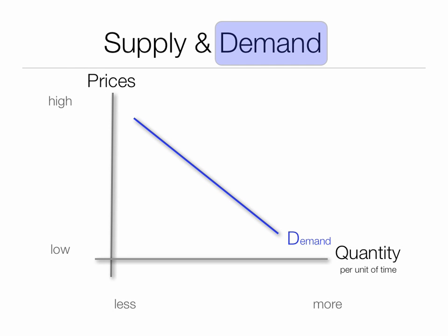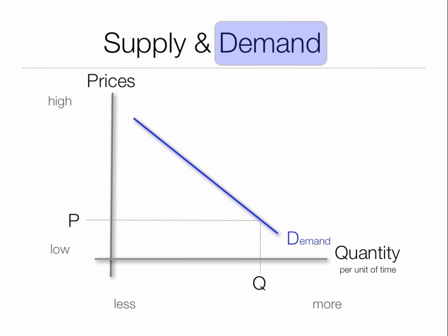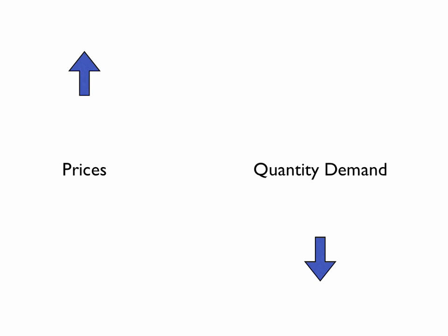Now let's talk about the demand curve. At low prices, people want to consume a lot, so demand is high. At high prices, people will consume small amounts. The demand curve slopes downward. At high prices, people consume less; at low prices, people consume more. In other words, prices and quantity demanded move in opposite directions — there's an inverse relationship.